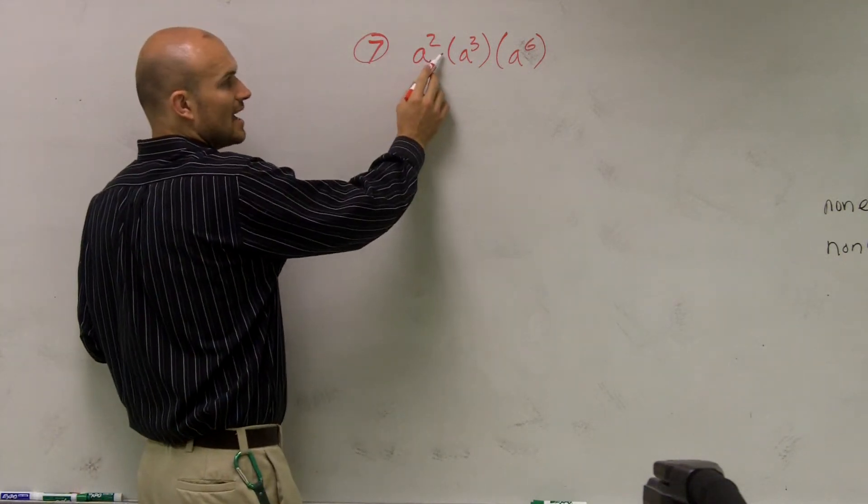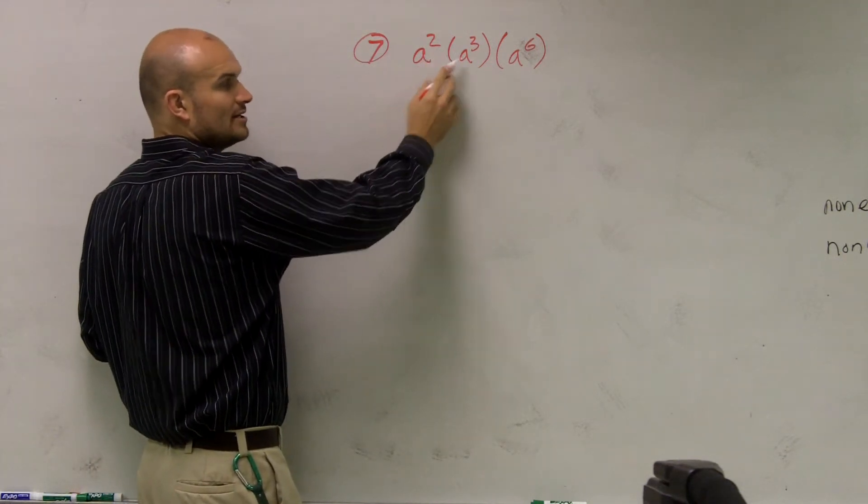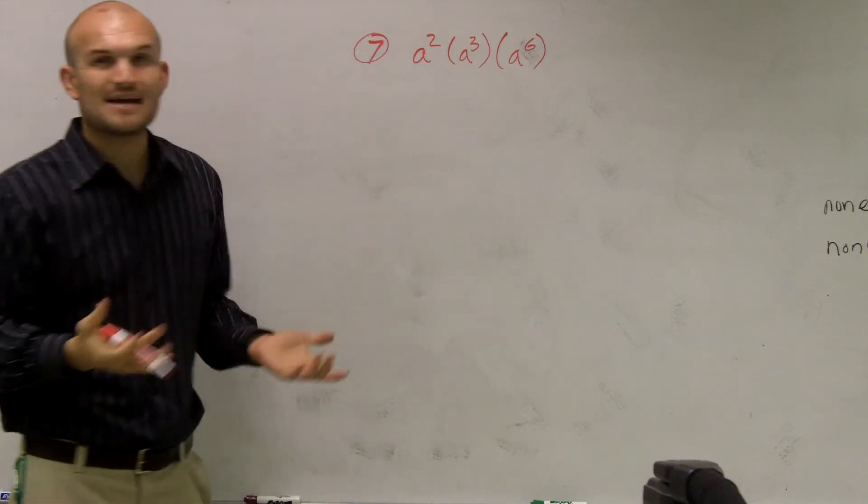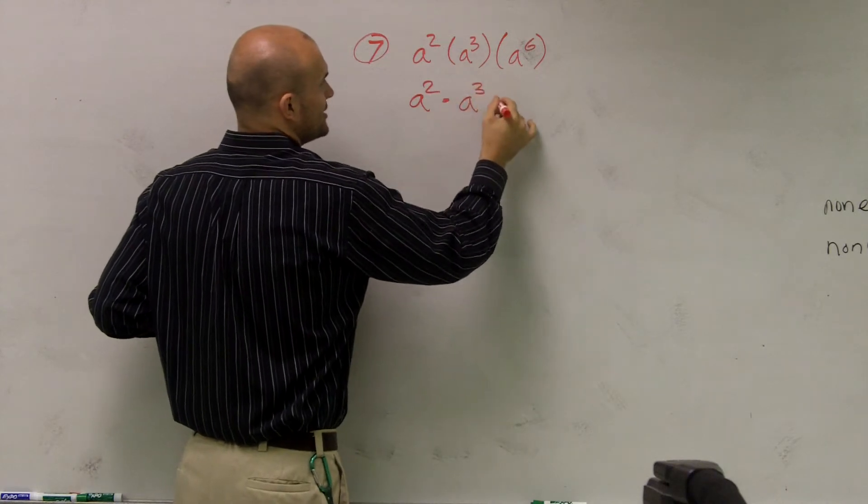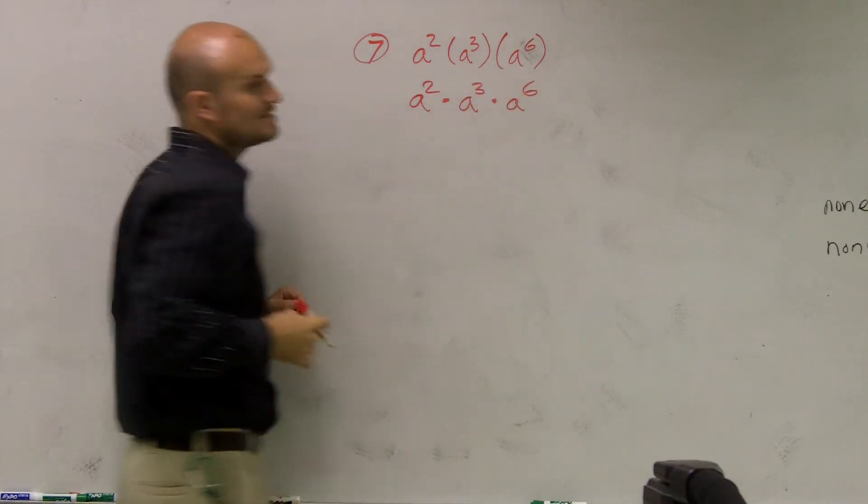So what I have is a multiplication of a squared times a to the cube times a to the sixth. So really, I can rewrite this as a squared times a cubed times a to the sixth.